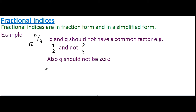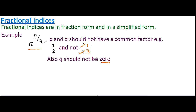In this section we are going to look at fractional indices. Fractional indices are in fraction form and in simplified form. For example, a to the power p over q is a fractional index. Here p and q should have no common factor — for example, it should be written as one half, not 2 over 6 since that simplifies to one third. Also, q should not be 0 because dividing by 0 is undefined.